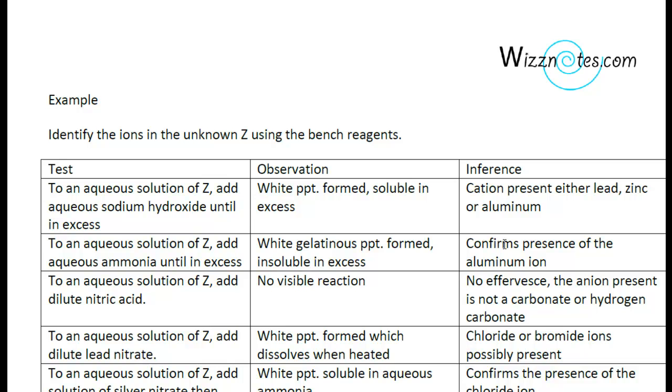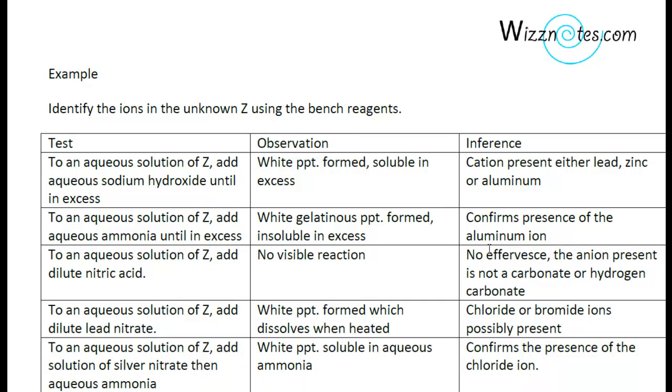Now we are going to test for the confirmation of the chloride ion being present. To test for the confirmation of the chloride ion, we add an aqueous solution of silver nitrate to the unknown followed by aqueous ammonia. A white precipitate should be formed when you add silver nitrate and this precipitate should be soluble in aqueous ammonia. This test confirms the presence of the chloride ion.